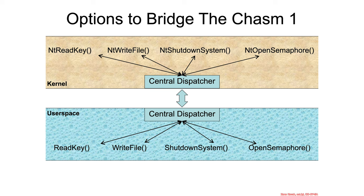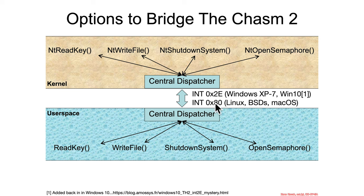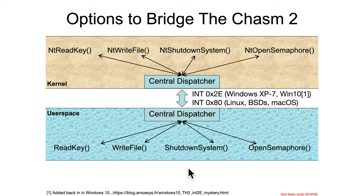So what are the options to bridge the chasm between user space and kernel space? The first is call gates, but those were really used circa Windows 95. The next are interrupts. Interrupts below 31 are reserved for Intel; above that, any operating system can do whatever it wants. Different operating systems can choose different interrupts — it's really up to them. Historically, Windows used interrupt 2Eh and Unix-type systems used interrupt 80h. The OS just has to agree with itself about which interrupt transitions from user space to kernel space. Interrupt 2Eh was used for a long time on Windows, then removed, and recently added back again for reasons related to virtualization.